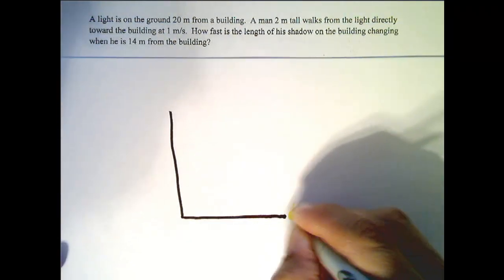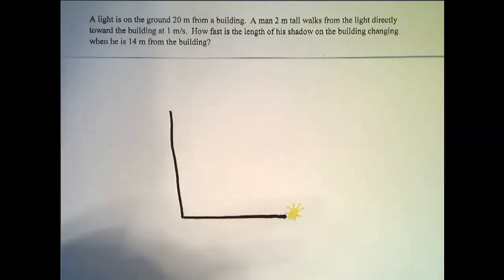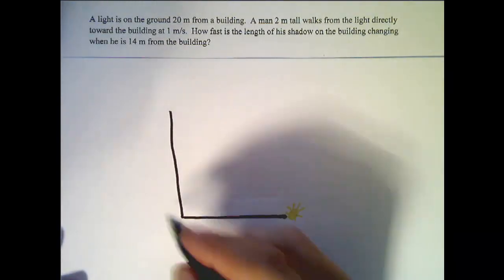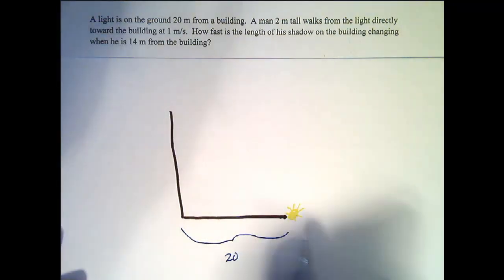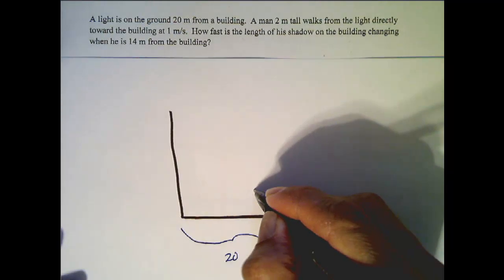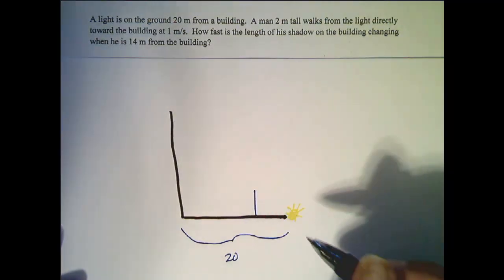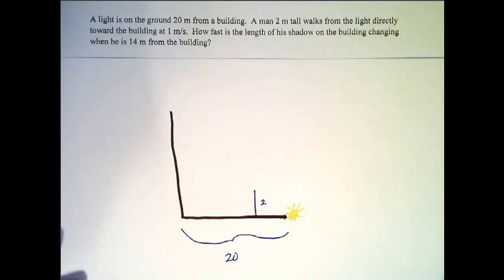So we have this light that's 20 meters, it's on the ground, and it's 20 meters away. So let's go ahead right now and write down 20 meters, because that distance the light is from the building is never gonna change. A man 2 meters tall, so that distance is never gonna change, so this is 2.